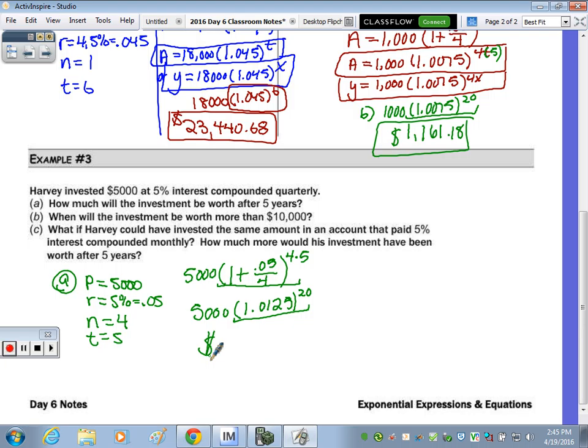Did you multiply by 5,000 just yet? Multiply by 5,000. Dylan, do you have it? Yep, $6,410.19.